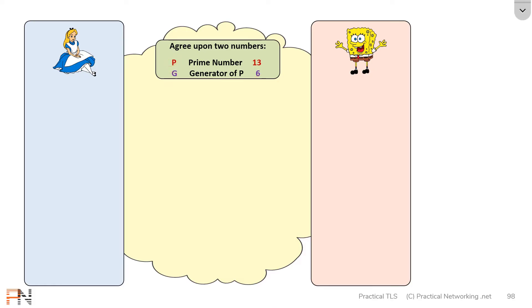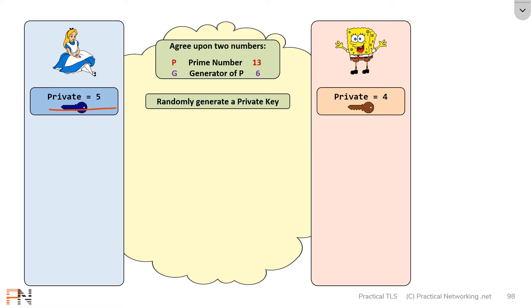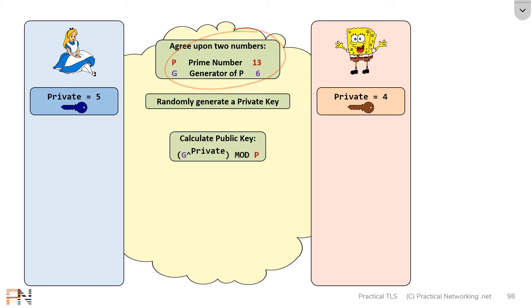Then Alice and Bob are each going to independently randomly generate a private key. For the sake of this example Alice randomly generates the number 5 and Bob randomly generates the number 4. They're then going to use their private values in combination with these values to calculate their public key. They're going to take the generator — in this case 6 — raise it to their private values 5 and 4 respectively, and then figure out the remainder when divided by 13.